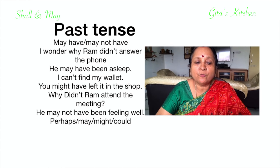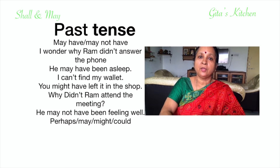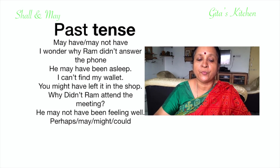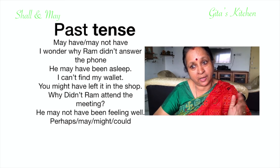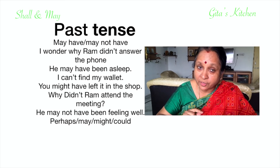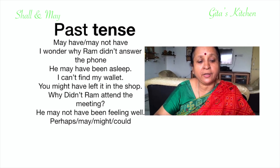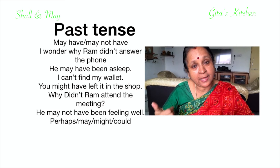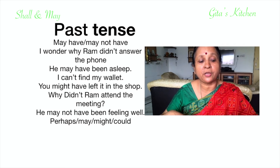When we use 'may' or 'might' in the past, we use 'may have' or 'may not have' in the negative. For example: 'I wonder why Ram didn't answer the phone — he may have been asleep.' When we use 'may' for the past, we say 'he may have.' Another example: 'I can't find my wallet — you might have left it in the shop; that's why you are not able to find it now.' Also: 'Why didn't Ram attend the meeting? He may not have been feeling well' — that is the negative form in the past tense.